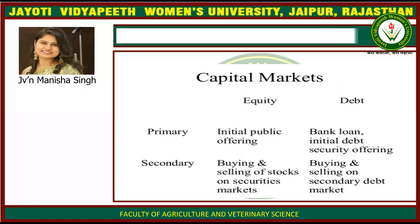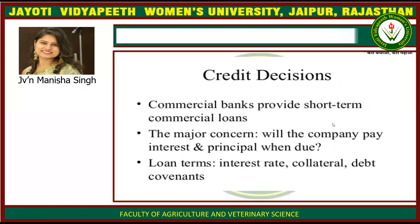Then credit decisions. Commercial banks provide short-term commercial loans, and the major concern is whether the company can pay interest and principal when due. Loan terms include interest rate, collateral, and debt covenants.